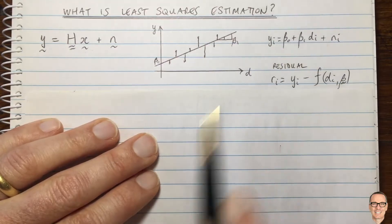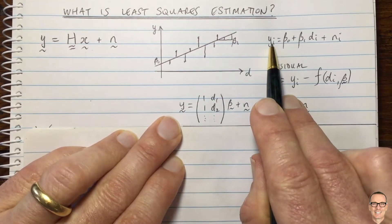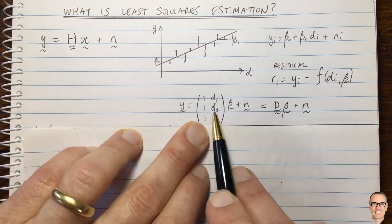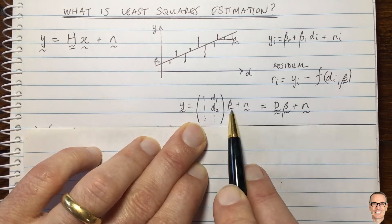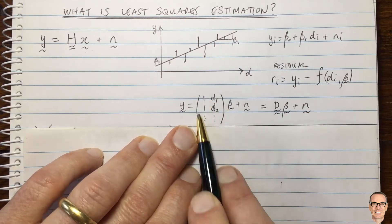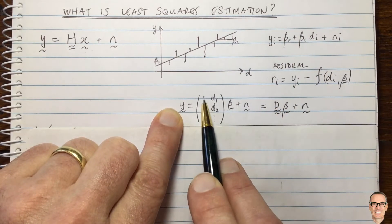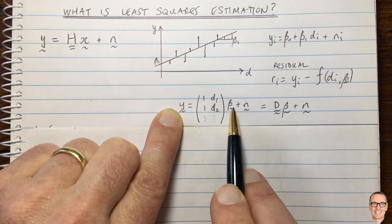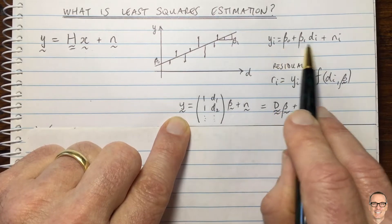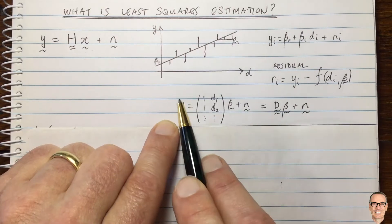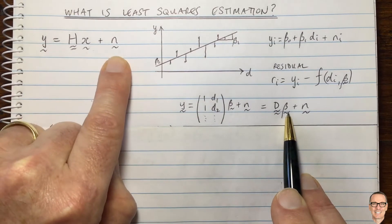Let me quickly show how the line-fitting example fits into this matrix system. We have y_i in scalar form, but we can rewrite that in matrix form. y becomes a vector with all elements stacked, beta (b0 and b1) is a two-by-one vector, and the noise is also a vector. The equivalent of the channel matrix here: for y_1 it equals b0 plus b1 times d_1 — one lot of b0 plus d_1 lots of b1 — and for y_2 likewise one lot of b0 plus d_2 lots of b1. This is just a matrix way of stacking all the i elements, so this can be written as a matrix D times vector b.